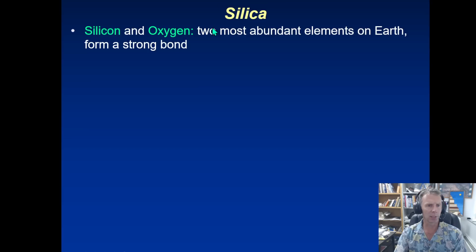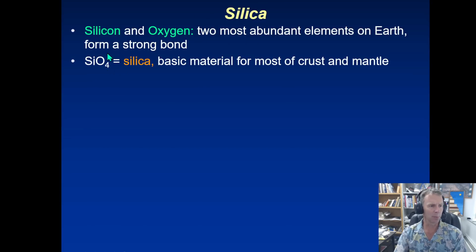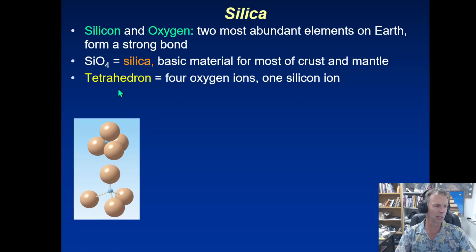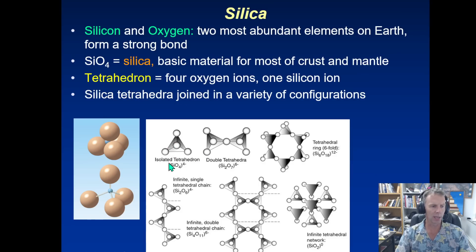When silicon and oxygen come together, we call the resulting material silica, with the basic chemical formula SiO4. Silica makes up a lot of the material we find in the crust and the mantle. As humans on the surface of the Earth, most or all of the rocks you're going to see are rocks from the Earth's crust, and occasionally we see deeper rocks from the Earth's mantle brought to the surface. So knowing about silica and silica-based minerals is incredibly valuable. Silica is bonded with one atom of silicon and four oxygen atoms, forming a shape called a tetrahedron. There are lots of different ways these tetrahedra can bond to each other and form very complex systems.